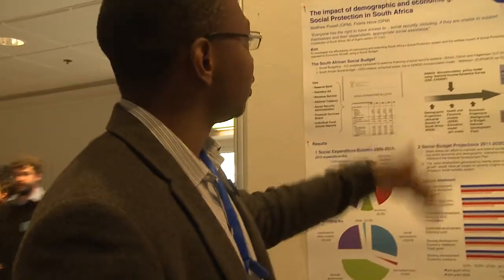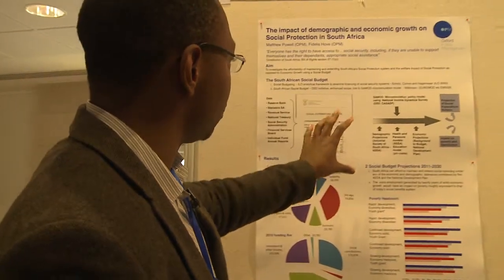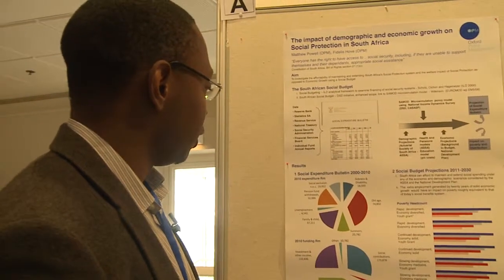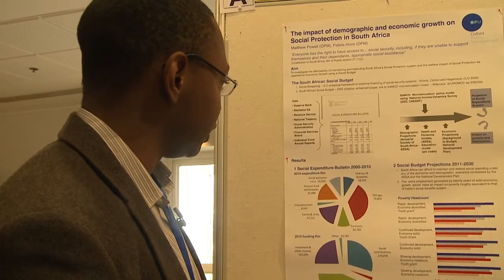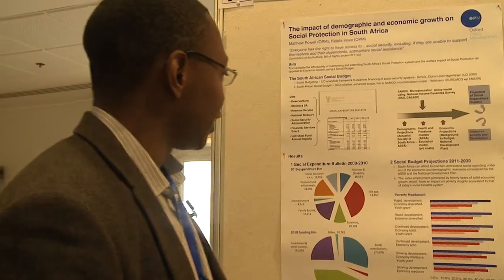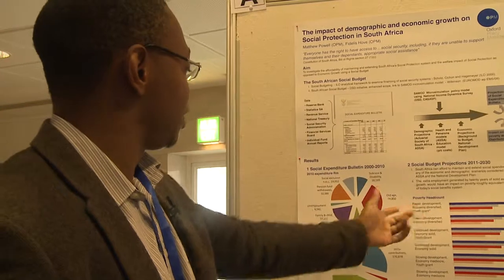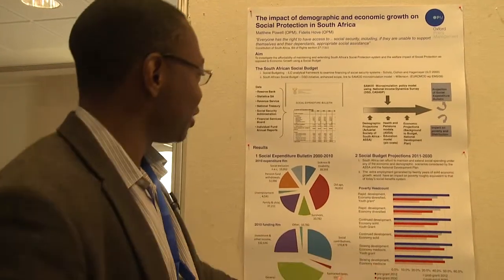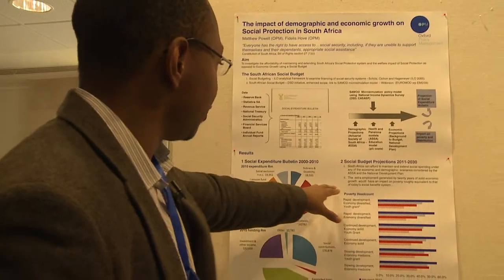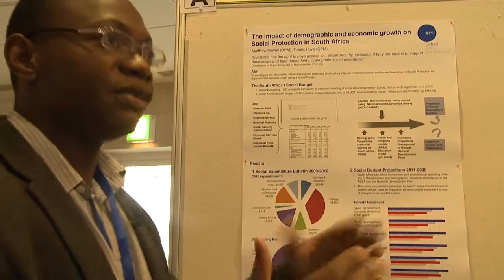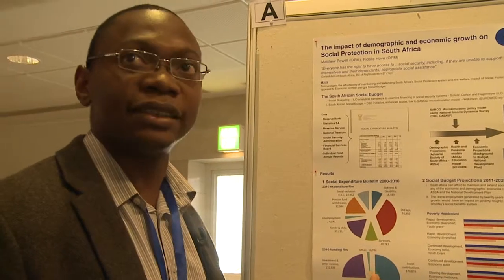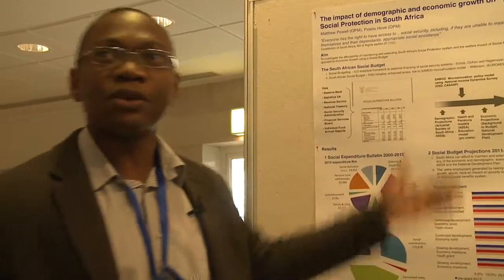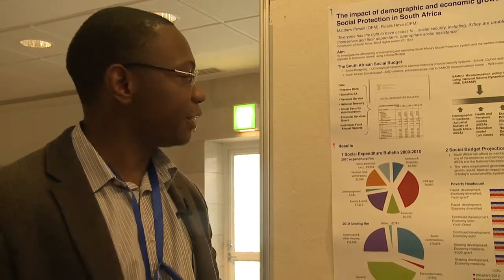Looking at the results from the projection model, we tried to engage with some of the policy debates. For example, if you look at introducing a youth grant with these parameters, you can see that there is fiscal space to do more with social grants — and that holds under any of the different growth scenarios from the planning commission.